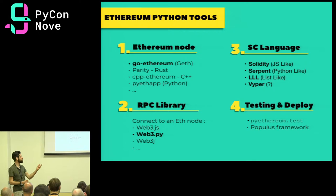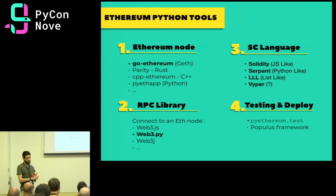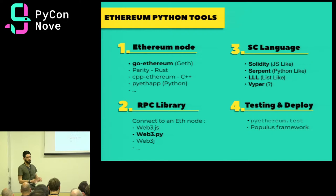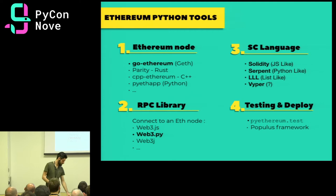Then you want to develop smart contracts, so you have to choose a language. In Ethereum there are currently three plus one languages: Solidity, which is JavaScript-like; Serpent, a Python-like language; LLL, a Lisp-like language very close to the EVM implementation, which you might not want to go near; and Viper, which we'll see later. Once you have your contract, you want to test it properly and thoroughly, because there's money at stake when you execute your functions, so you must be sure everything is implemented correctly.